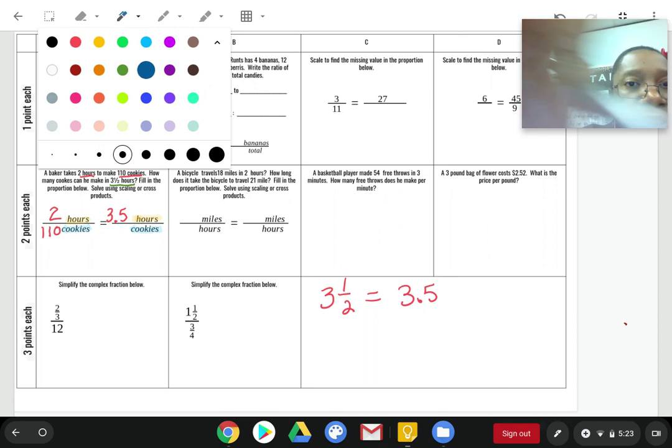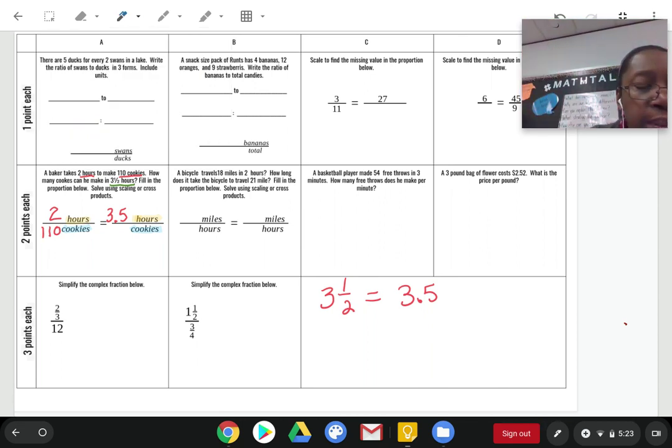So, I need you to see that we could use scaling or cross product. I'm going to use scaling here, honestly. I know that if I take two and I multiply two by 55, that gives me 110. So, that's the same thing I'm going to do on the other side. I'm going to take that three decimal five. I'm going to multiply it by 55.